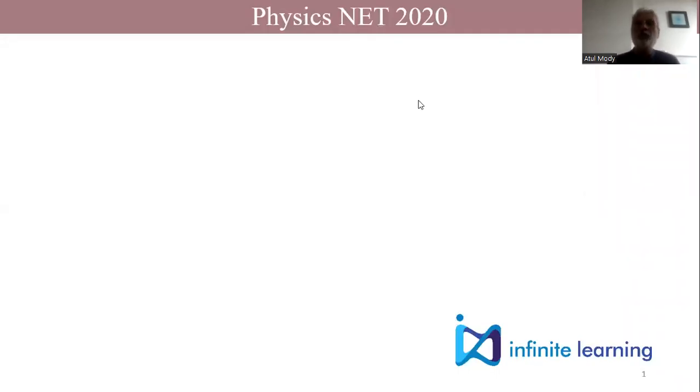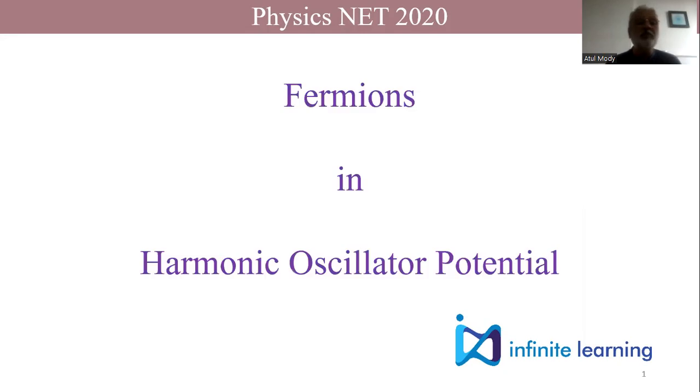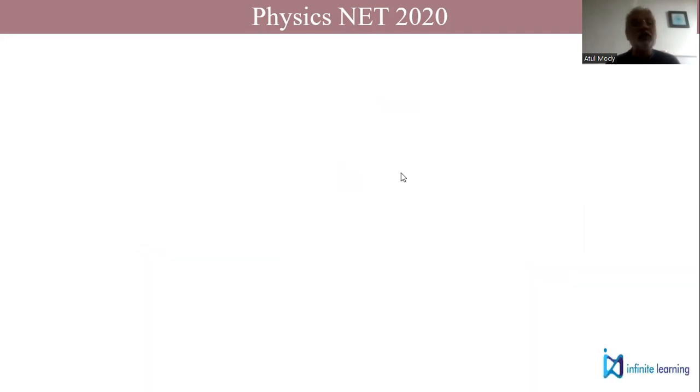Hello, in this video we are going to discuss a problem from the NET exam for physics 2020. The question code for the problem is about fermions in a harmonic oscillator potential.